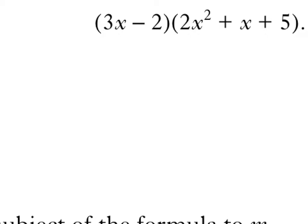Section 1, Example 3. I've got a 2 by 3 bracket. So 3x minus 2 in the first bracket, 2x squared plus x plus 5 in the second bracket. So I'm going to first of all do 3x times the second bracket, then minus 2 times the second bracket.